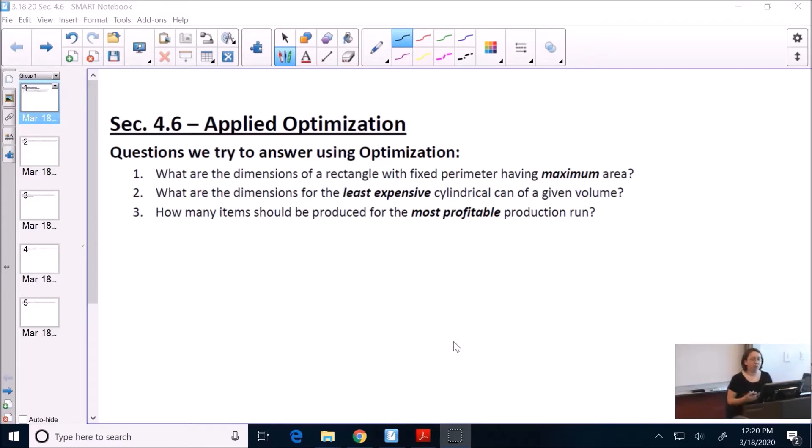Questions we try to answer using optimization are: what are the dimensions of a rectangle with a fixed perimeter having maximum area? That's one question we're going to try and answer. That's a mathematical question and it's called geometry. Another type of question might be, what are the dimensions of the least expensive cylindrical can of a given volume?